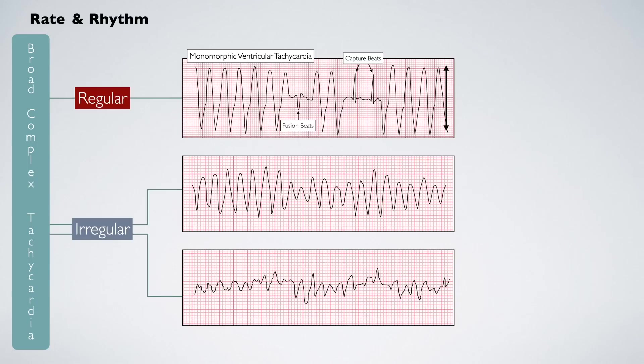If there are three or more abnormally shaped complexes that are irregularly spaced with varying height and shape, this is likely polymorphic ventricular tachycardia. Fusion and capture beats may also be present. If there is complete irregularity of the complexes and rhythm, this is likely ventricular fibrillation.